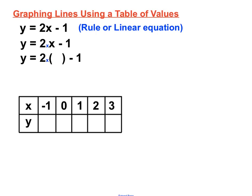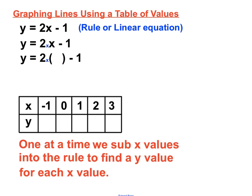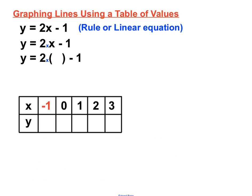I'll leave a set of brackets there. One at a time, I'm going to sub in the x values into the rule and find a y value for each x value. Our first x value is x equals minus 1. We'll place that into the brackets, multiply by 2, and then take away 1. 2 times minus 1 is minus 2, minus another 1 gets us to minus 3. By subbing in that x value of minus 1, we've got a y value of minus 3, and we'll put that into our table.